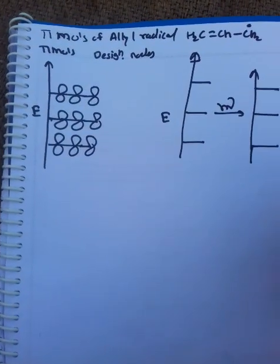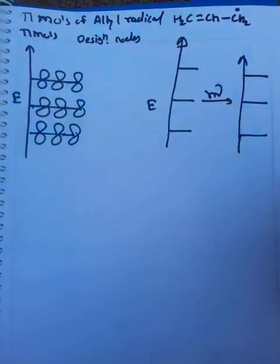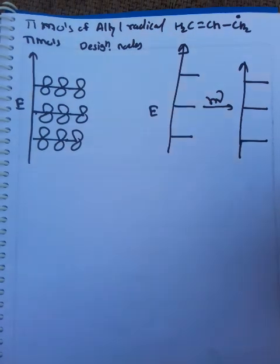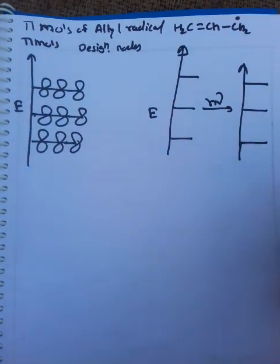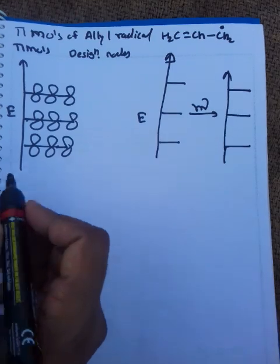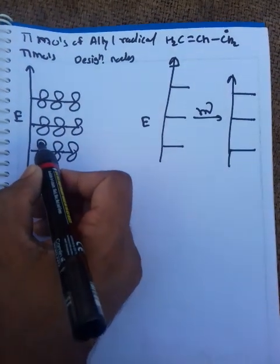Pi molecular orbitals of allyl radical, that is H2C=CH-CH2•. So here these are three pi molecular orbitals. What are the notations? At the left hand side,